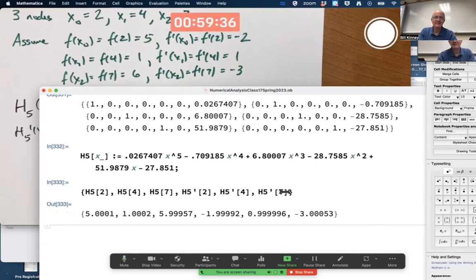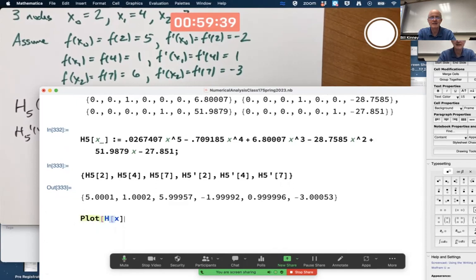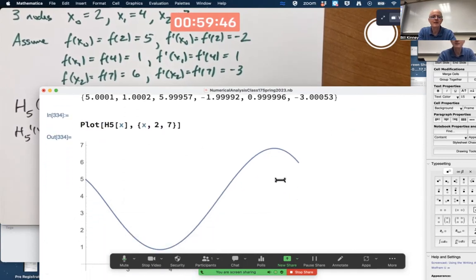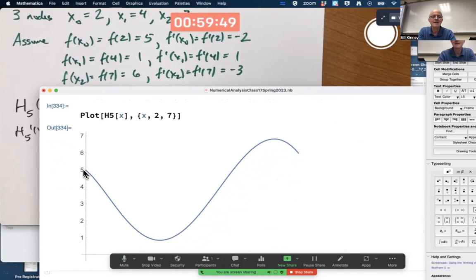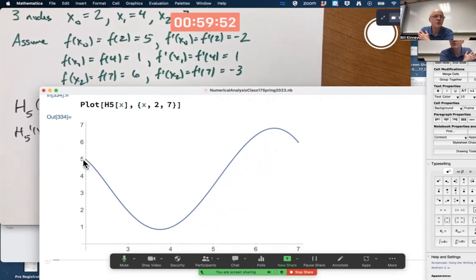And then you can plot it. From 2 to 7, there's what it ends up looking like. The point here at 2, 5 is a data point with slope negative 2. 4, 1 is a data point with slope positive 1. And 7, 6 is a data point with slope negative 3. And that's the minimum degree polynomial that will satisfy those conditions. The unique minimum degree polynomial.